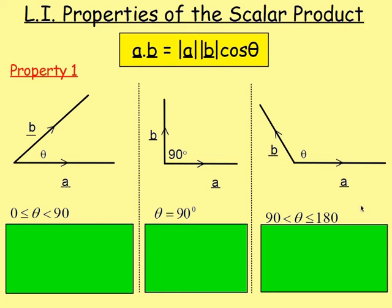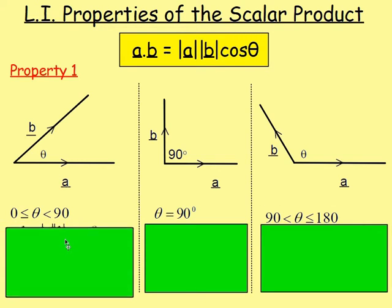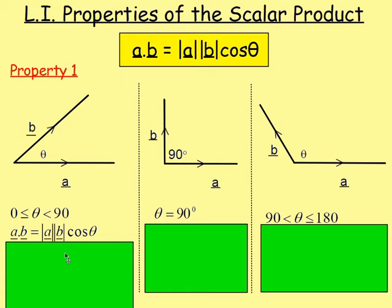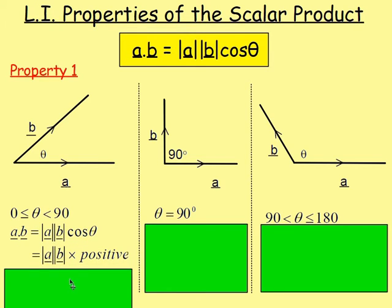Property one: for your scalar product you need a couple of vectors that are tail to tail, pointing out from the vertex. The angle could be between 0 and 90 degrees, exactly 90 degrees, or between 90 and 180 degrees. If you're working out A dot B and the angle theta is between 0 and 90, the cosine of anything in that range is positive — think about CAST, in the first quadrant all sin, cos and tan are positive. So A dot B will be positive.